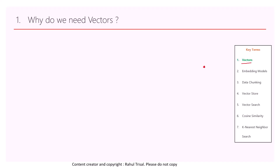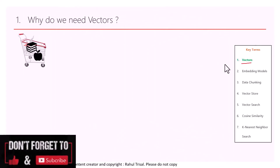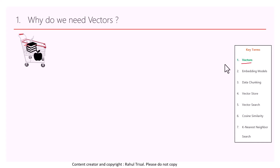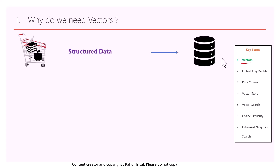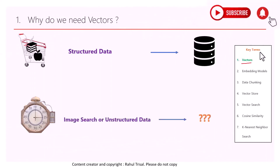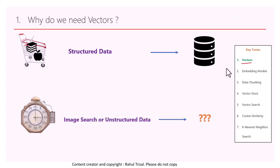Why do we need vectors? Say you go to a retail store and buy some apples and books, then go to the cashier to pay. It's easy for the cashier to calculate the amount because you can store the products and their prices in a relational database — it's all structured data. But now let's say you're watching Instagram and you see a beautiful wall clock but want one with a different color. How do you find a similar image with black color? That's what we'll explore — how to search unstructured data like images.